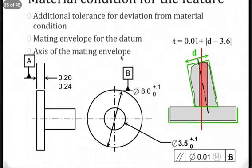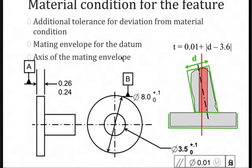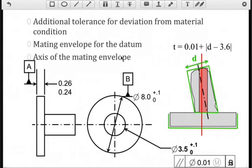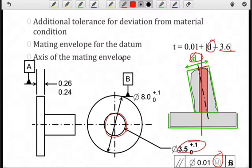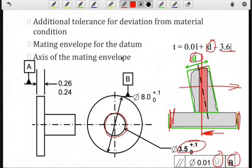We can also introduce material condition for the feature itself. When I have a material condition, as indicated by the M in the feature control frame, I'm going to determine the actual size of that feature when I make the part — that will be D. So I use the mating envelope, find the smallest cylinder that fits around that feature, and now I can determine D and subtract 3.6, where 3.6 is the maximum material condition for that feature. Everything else remains the same. Datum B is determined by the mating envelope, indicated by our red line, and that's how we align the cylindrical tolerance zone parallel to datum B, even if I translate it left to right.